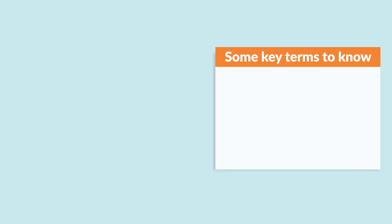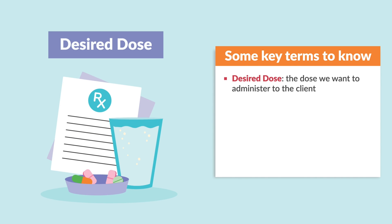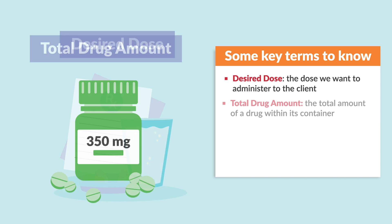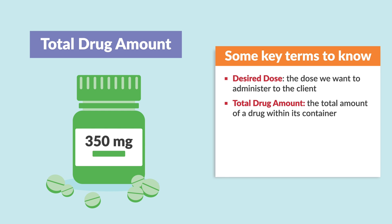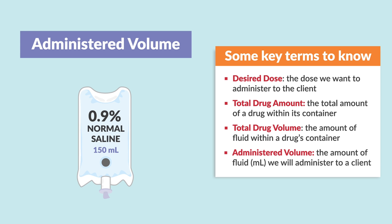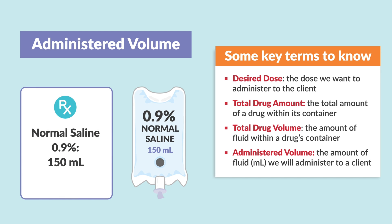Some key terms to know: desired dose — that's the dose we want to administer to a patient. Total drug amount — the total amount of the drug within its container. Total drug volume — the amount of fluid within the drug's container. And administered volume — the amount of fluid in MLs we will administer to a patient.